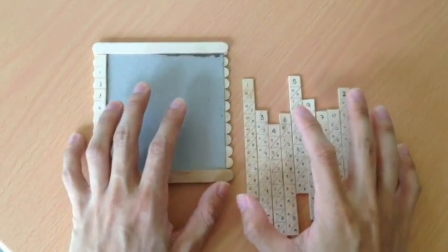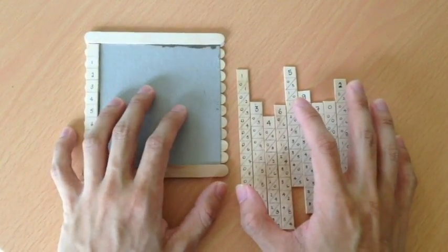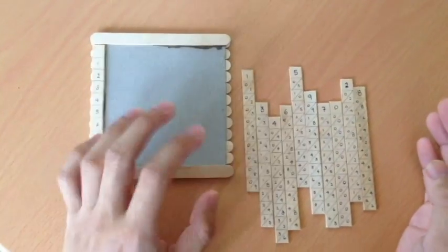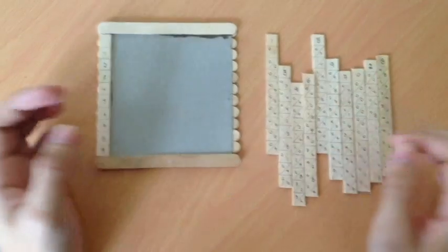This is Napier's Bones and it is a calculating device created by John Napier. This device consists of two items, the baseboard and the rods.